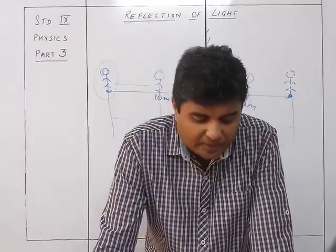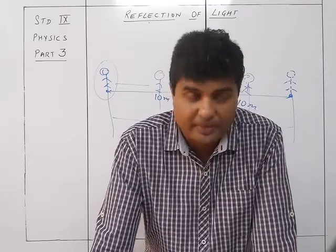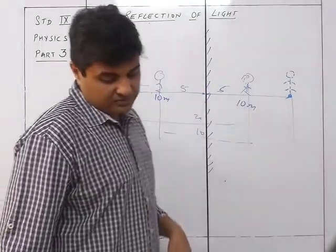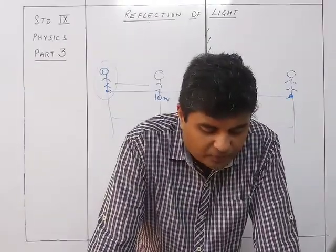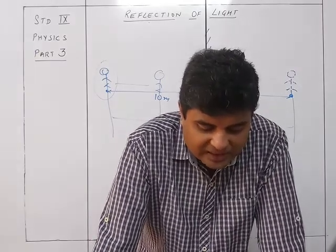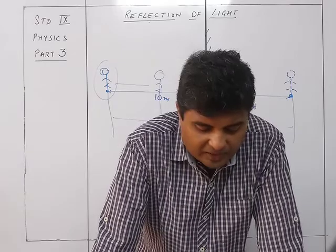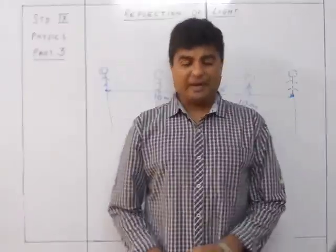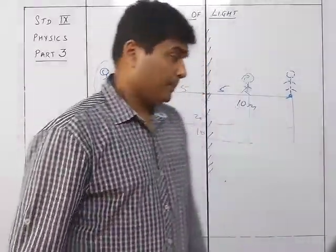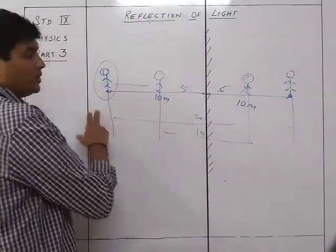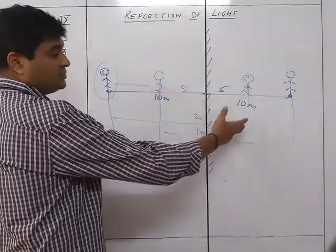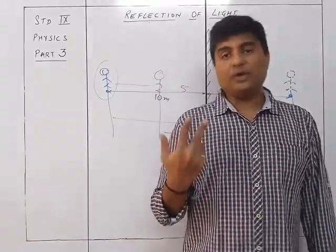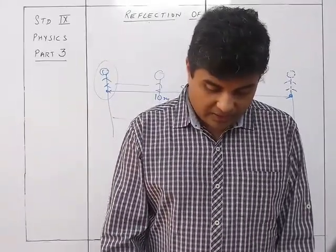For example: a boy standing 5 meters from a plane mirror finds the image to be 10 meters from him. If he moves to position B, 2 meters further away from the mirror, the distance from him to the mirror becomes 7 meters, and his image appears 14 meters from him. The distance increased by 2d — the mirror moved 2 meters so the object-to-image distance changed by 4 meters.